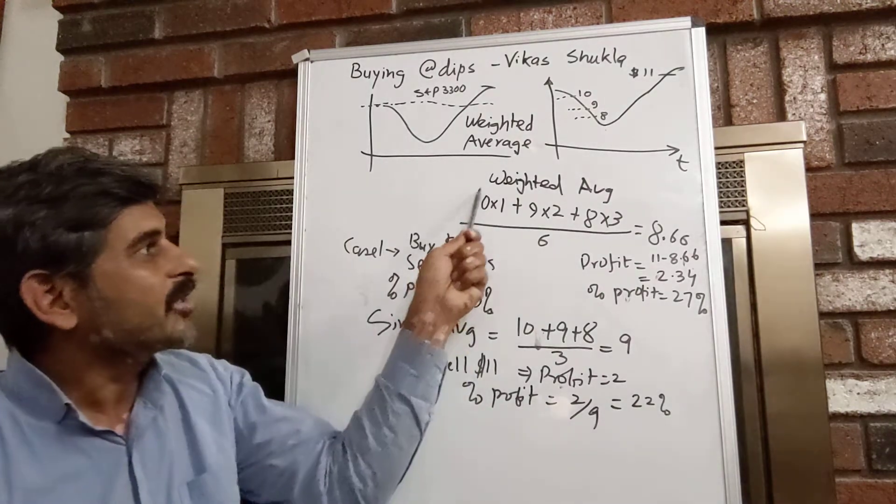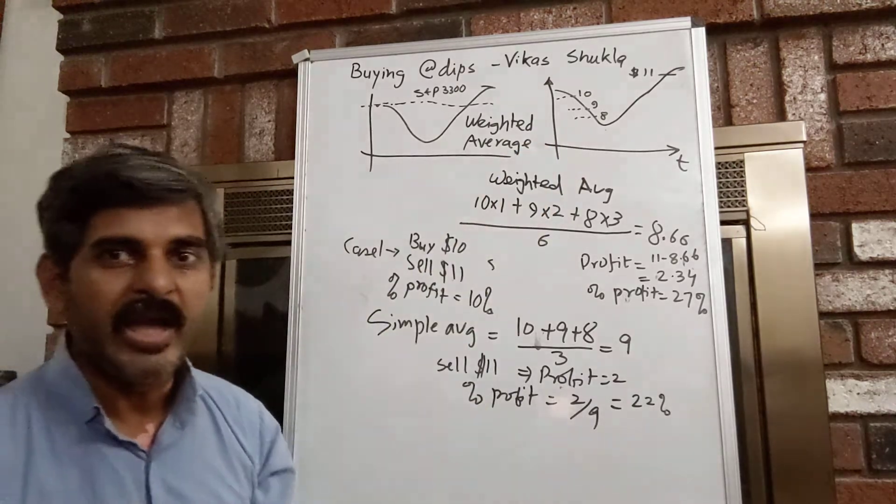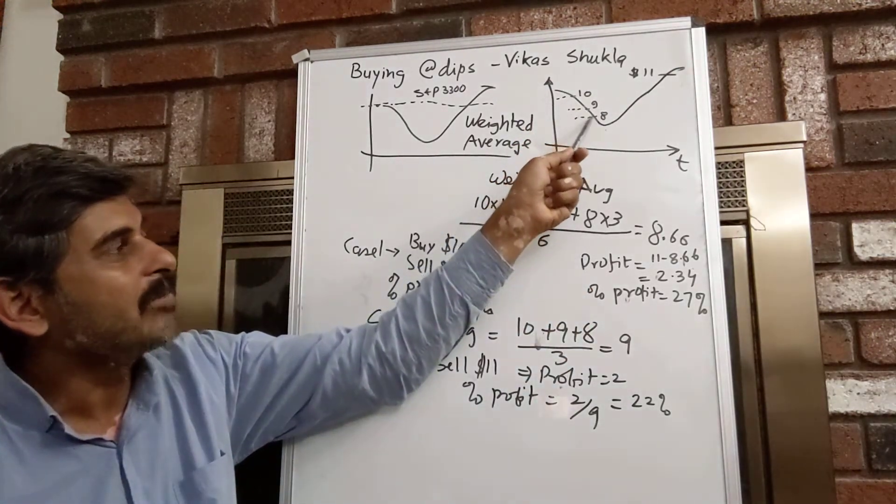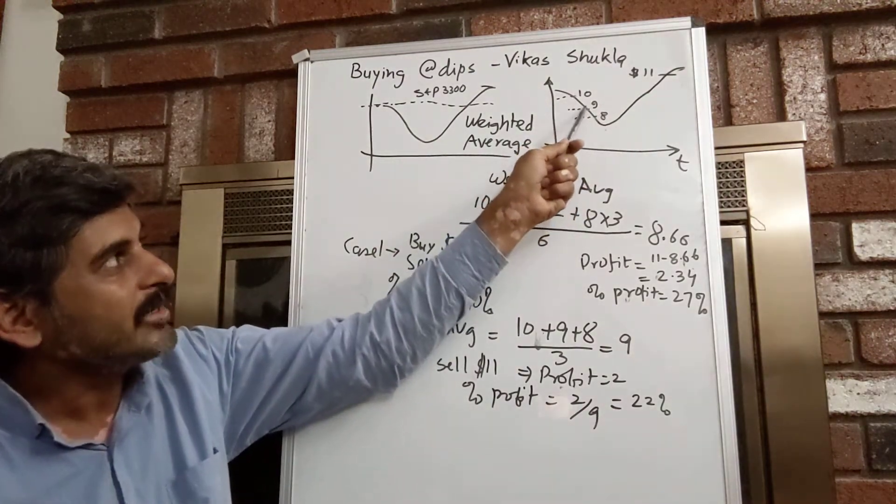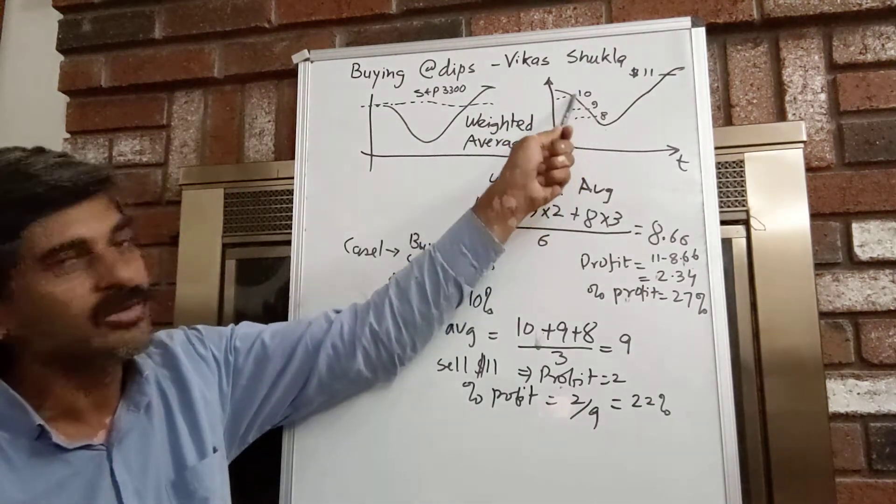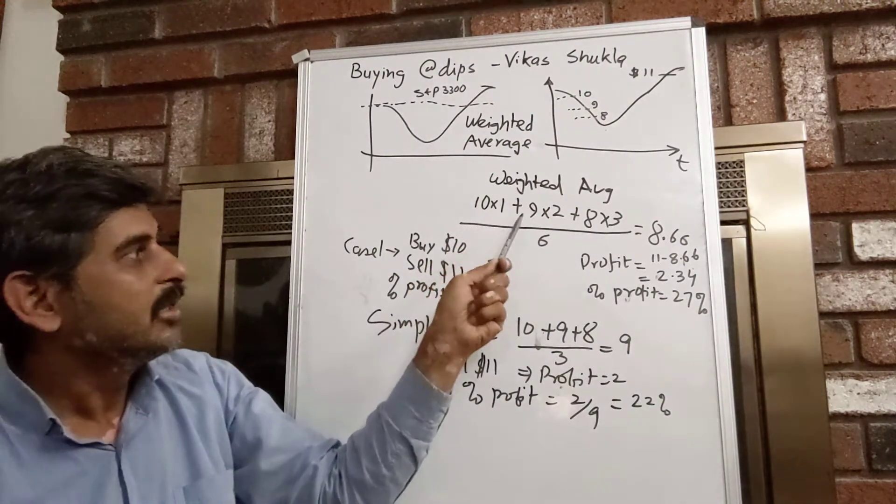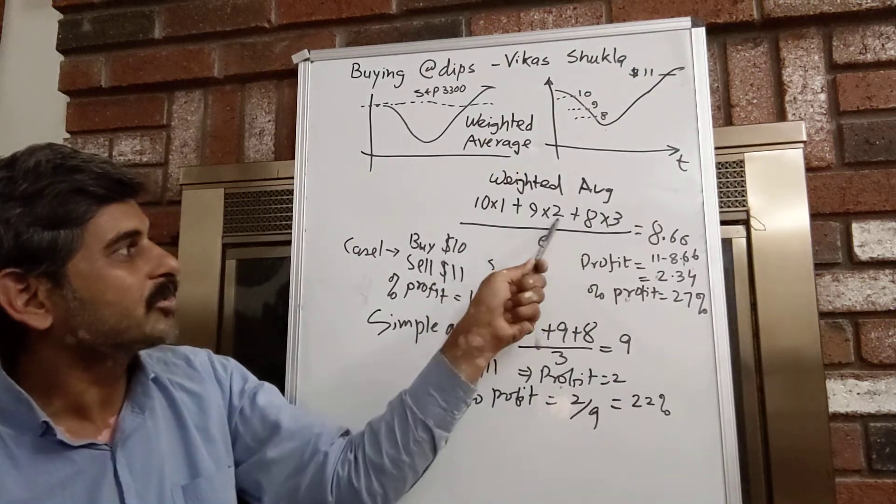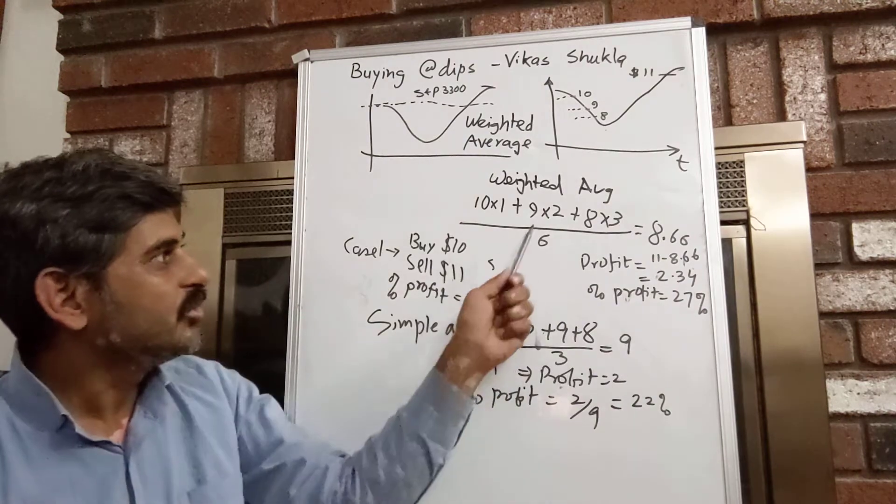So the formula for this weighted average, how do I calculate at the end of this scenario, what is the average price of my share? And because I am buying more at the lower price, more quantity at the lower price, the average is not at the center. It's more towards the lower side, it's closer to 8 than to 10. So the weighted average is going to be 10 into 1 plus 9 into 2 plus 8 into 3 divided by 3 plus 2 plus 1 which is 6.